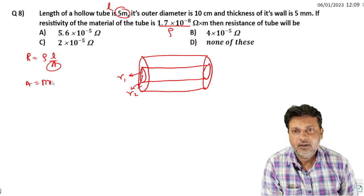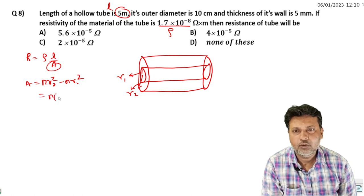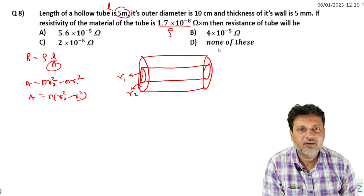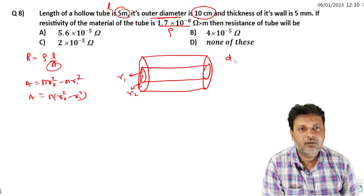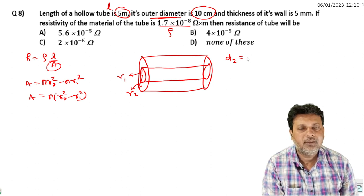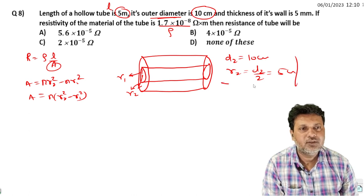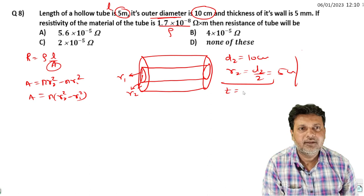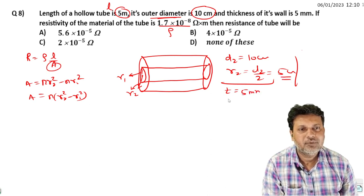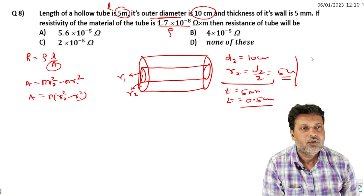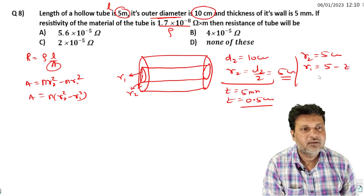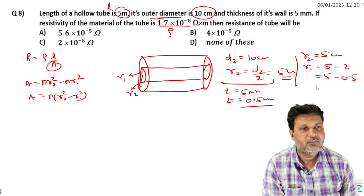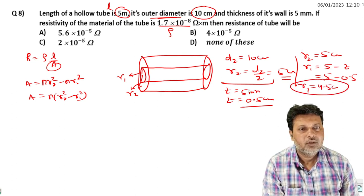Outer diameter is 10 centimeters, so r2 equals 5 centimeters. Thickness is 5 millimeters which is 0.5 centimeters. So r1 equals 5 minus 0.5 equals 4.5 centimeters.